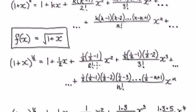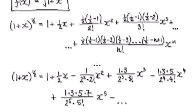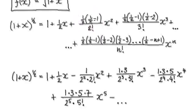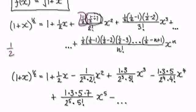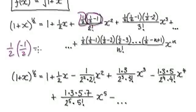This whole thing here will then take you to here. Now tidy this up. Let's look at this term. You've got a half, and then a half take away one, so that would be negative a half. So that equals negative one over two squared.